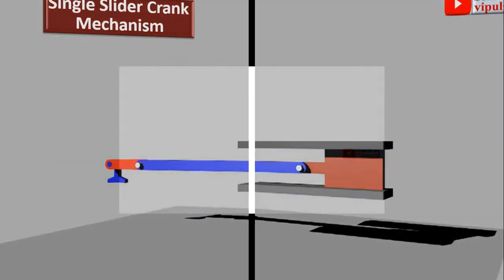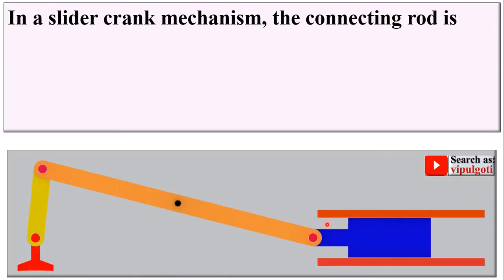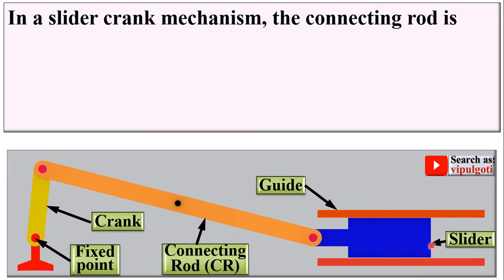Now let us move to the description of the problem in a slider crank mechanism. First you have to draw the single slider crank chain mechanism. In it, the four components are: the crank, the connecting rod, the slider, and the guide which is fixed — this is the fixed point, so it is called the frame. The four components are: crank, connecting rod, guide, and the piston or slider.